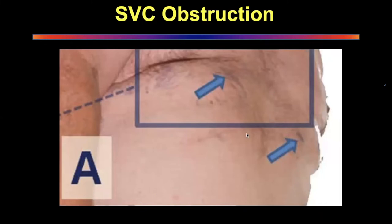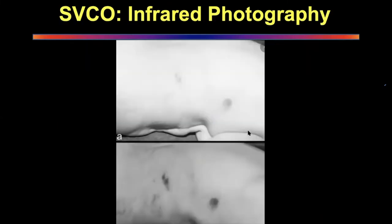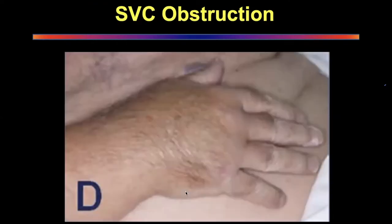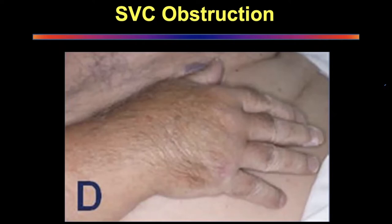Infrared photography can clearly show all dilated veins, though nowadays you have much better investigative tools. There will be edema of all surrounding tissues — head, neck, and arm predominantly. The epigastric vessels and chest wall telangiectasia are all visible signs of SVC obstruction.